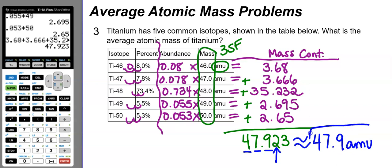Checking reasonableness: the answer 47.9 amu is between the lowest mass of 46 and the highest mass of 50, confirming this is a reasonable answer.